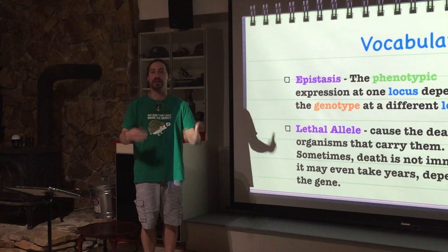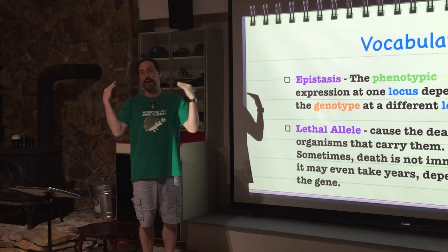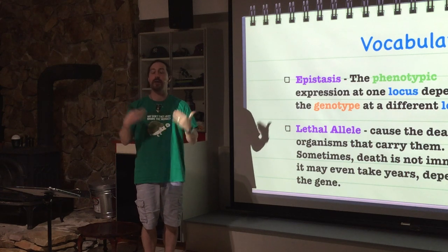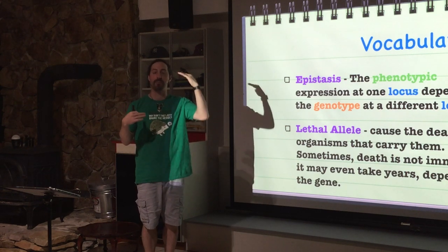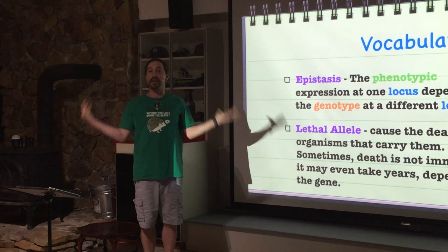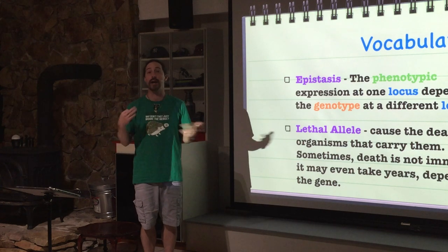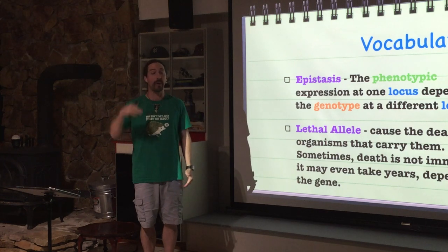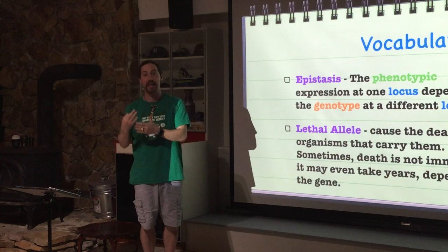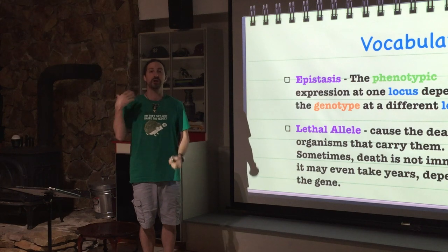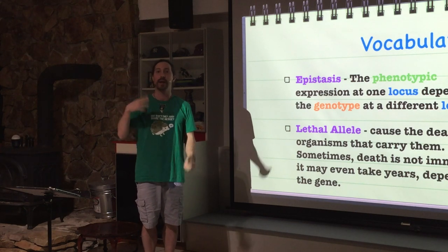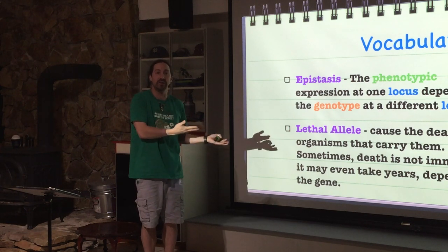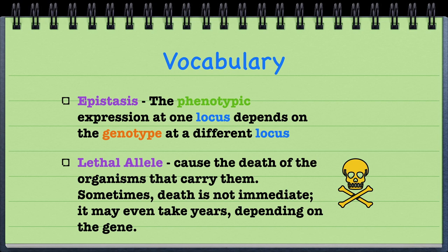For example, hair color isn't necessarily going to be expressed if I have an allele that says I'm bald — then you can't tell what hair color I have. I don't have a phenotype of hair color, and you wouldn't know my genotype for hair texture either. So my genotype for being bald affects the phenotype for hair color or texture.